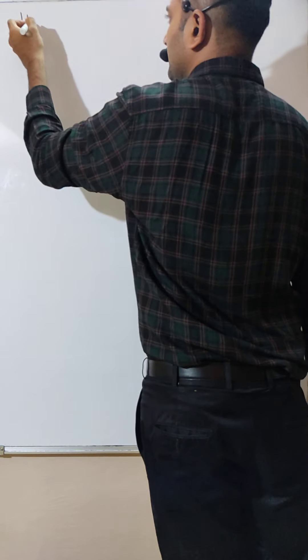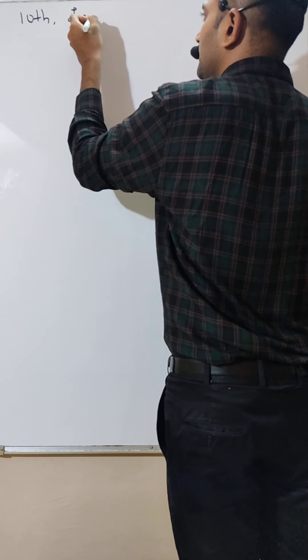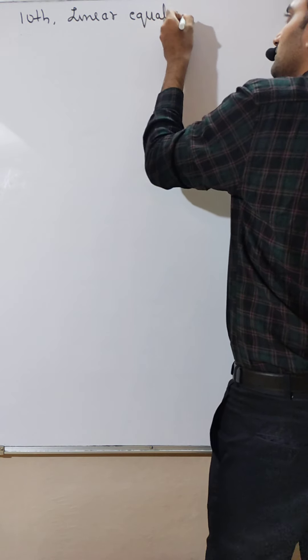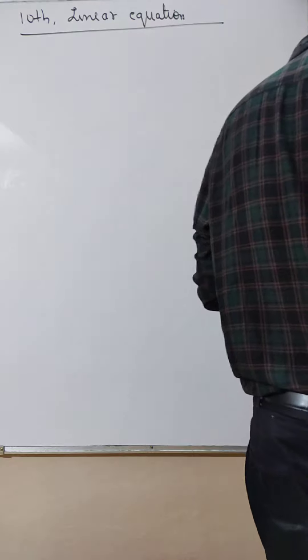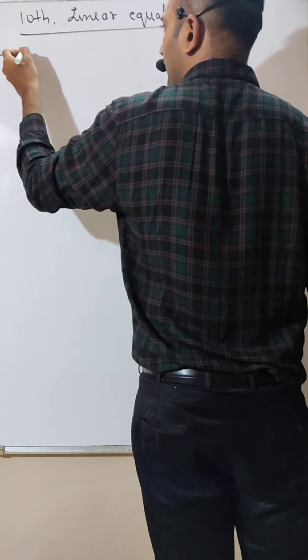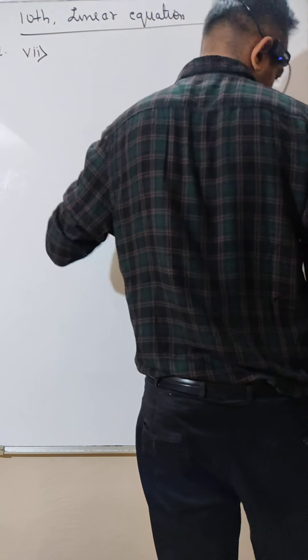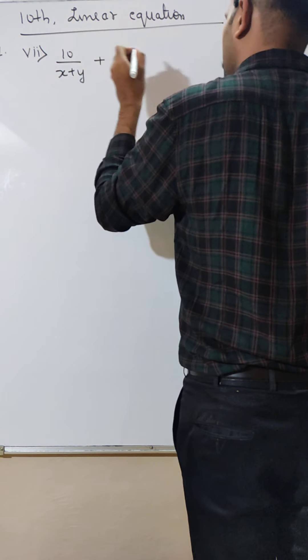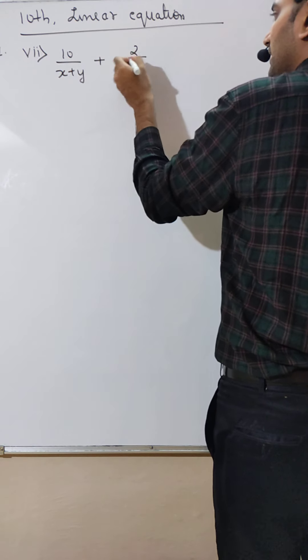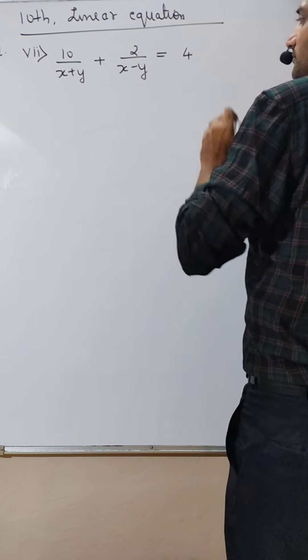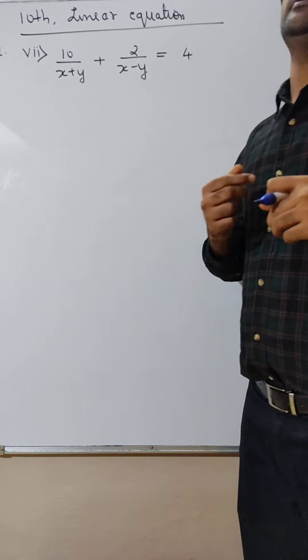Okay, so let us begin 10th linear equation, second one. First problem was 7th one. The equation is 10 divided by x plus y plus 2 divided by x minus y is equal to 4. How to solve this? Just don't worry, I am here.